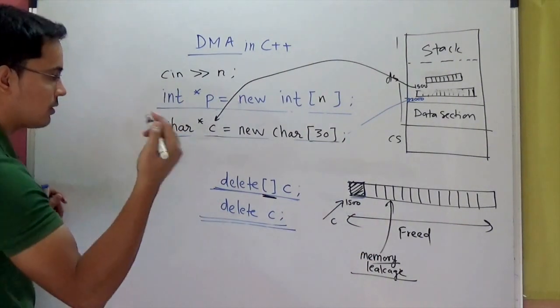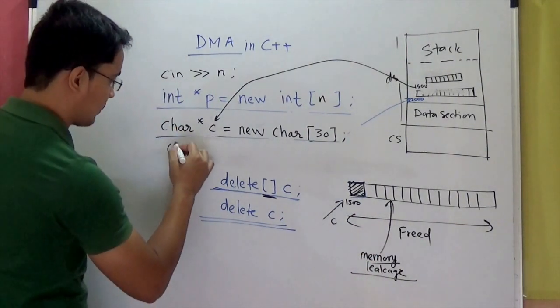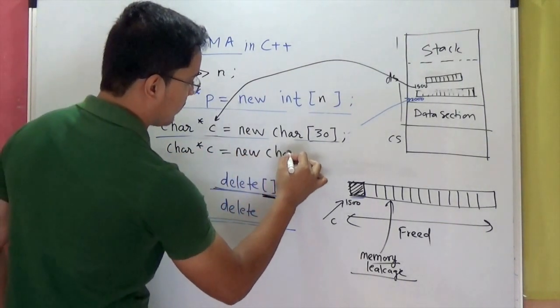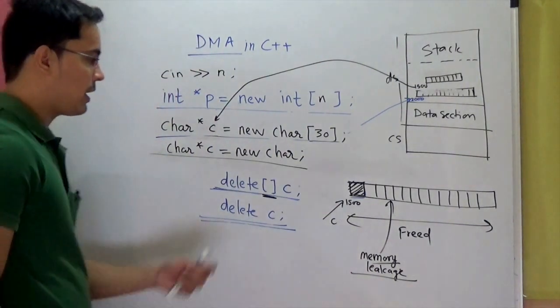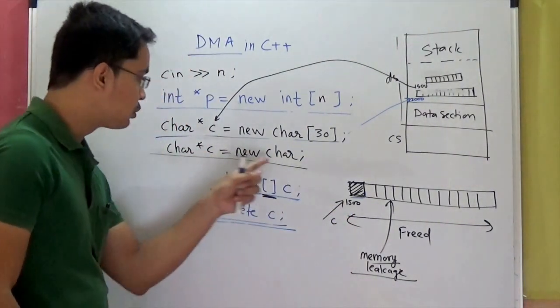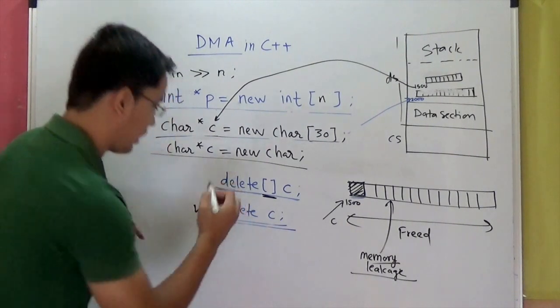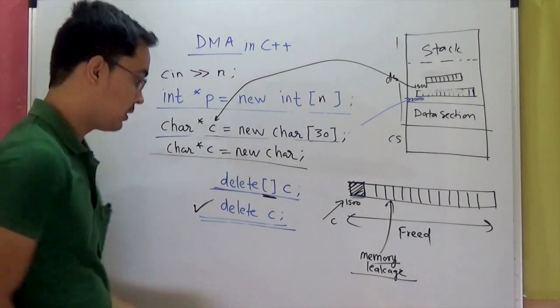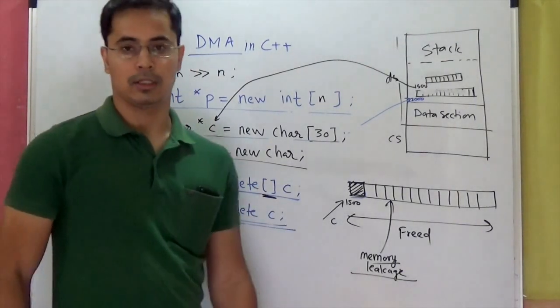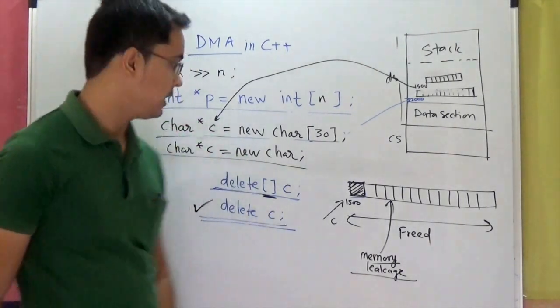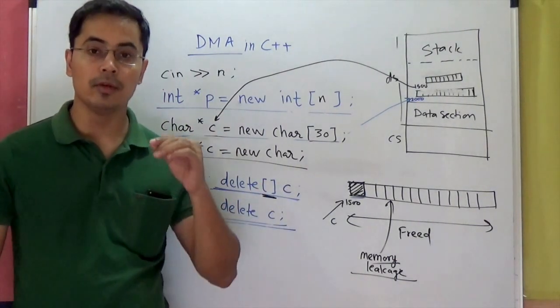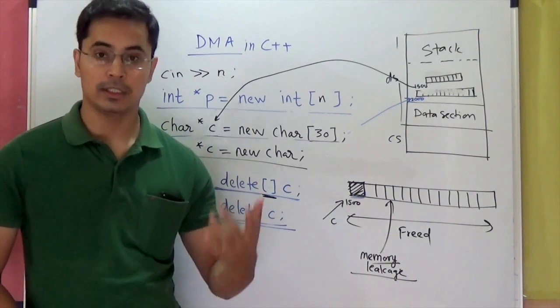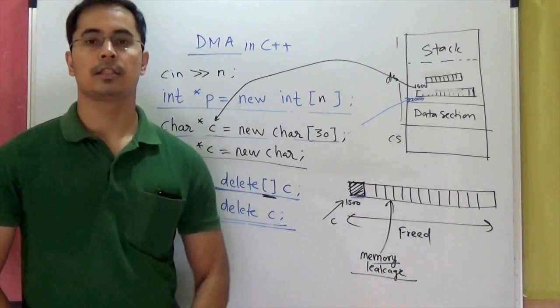If you are allocating memory only for storing one element. For example, character star C equal to new char. Here, you are dynamically allocating memory to store only one character. Then, this is okay. That will de-allocate that memory for one character. Otherwise, you have to use this subscript notation. Please do not forget that. It is easy to use and we will see the application of this in the upcoming videos when we talk about objects and classes. See you in the next video.